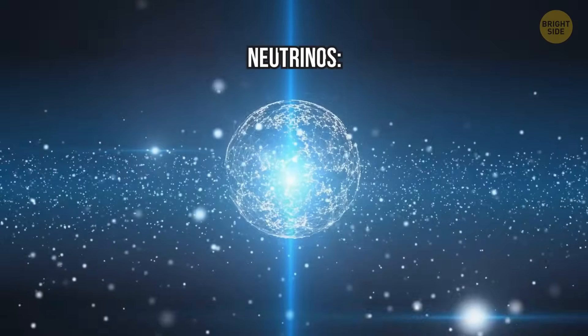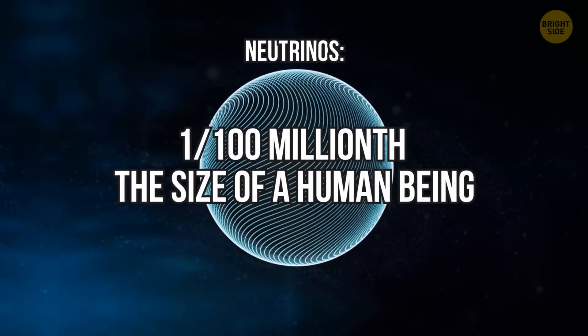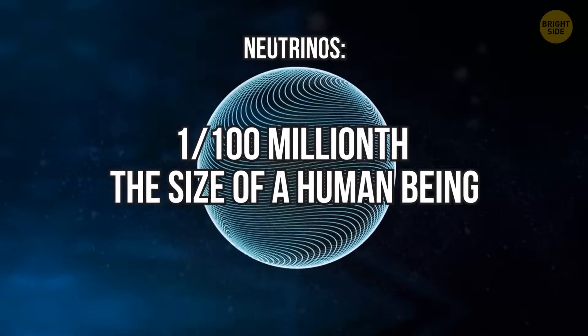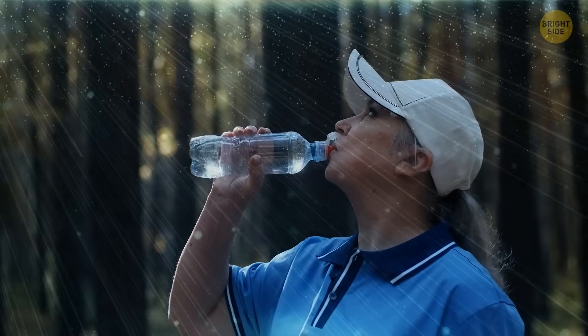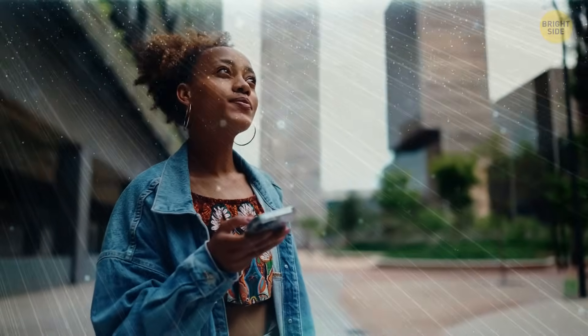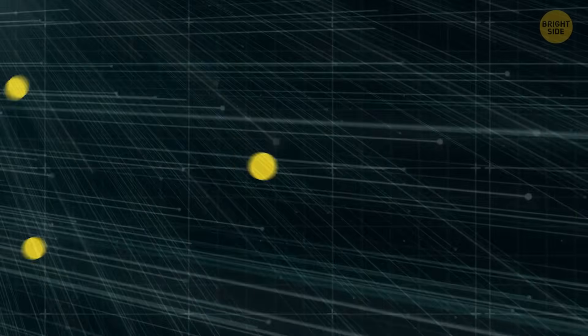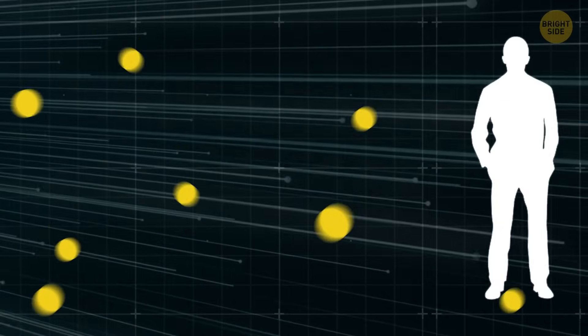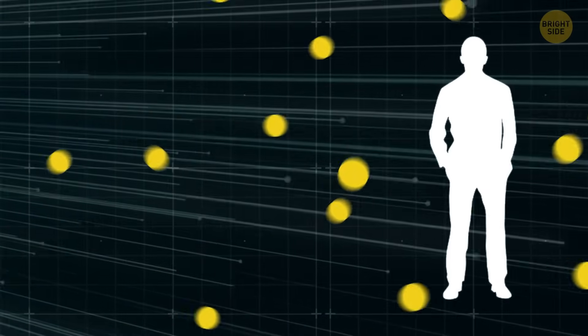Neutrinos are high-energy cosmic particles. They're incredibly small, lack any charge, and have almost no mass. Trillions of such particles pass through our bodies every second, and we don't even notice them. All because they almost don't affect ordinary matter. That's how insignificant they are. On average, in our entire life, each of us gets affected by a maximum of one neutrino.